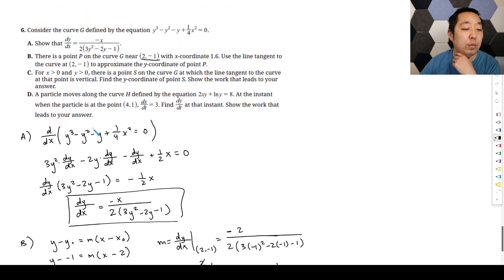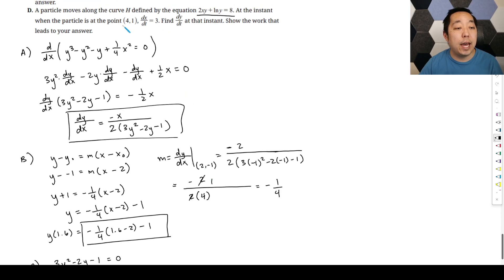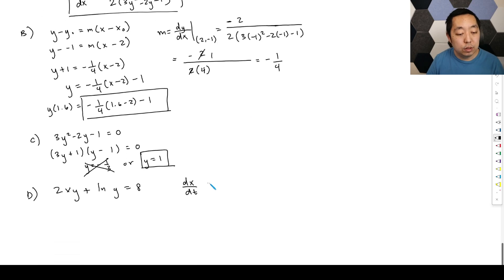And then last step, particle moves along the curve defined by that, at that instant when the particle is there dx dt is three, find dy dt at that instant. So this is a related rate, they're giving you a rate of change with x. They want you to find a rate of change with y. And they give you an expression that relates x and y. So we're going to write that expression down, 2x y plus l and y equals eight. And they told us that dx dt, they say three, three at that point equals three at the point 4, 1.